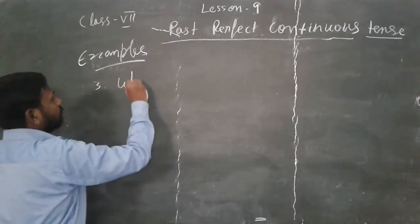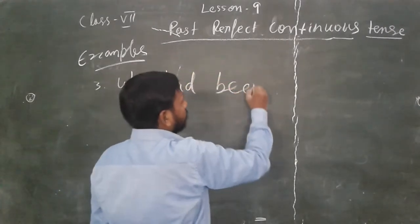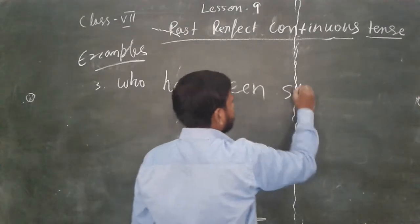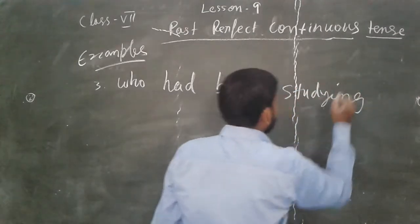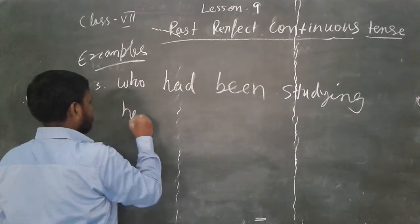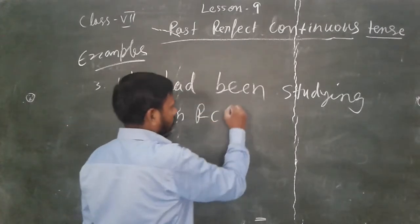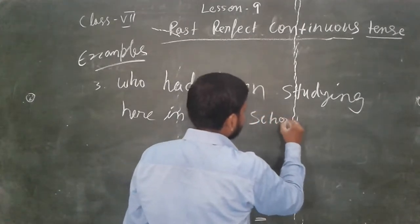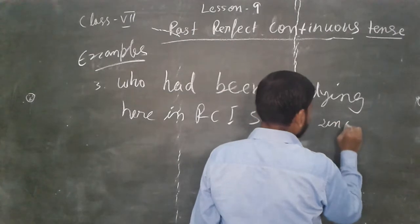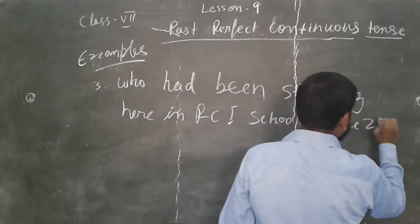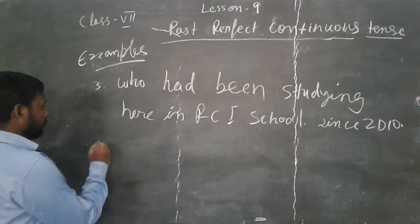Let's see some more examples. Example with 'who': 'Who had been studying here in RCI School since 2010?'